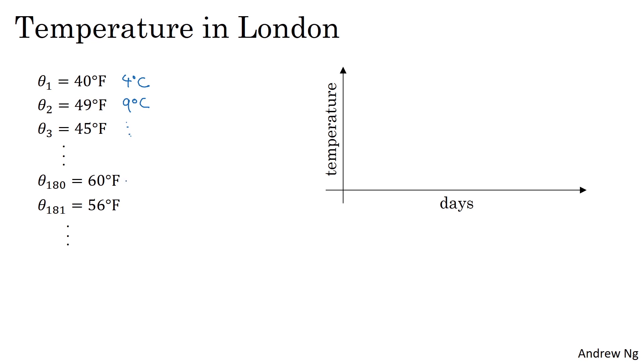And then about halfway through the year, a year has 365 days. So this would be day number 180, sometime in late May I guess. It was 60 degrees Fahrenheit, which is 15 degrees Celsius and so on. So it starts to get warmer towards summer and it was colder in January. So you plot the data, you end up with this. With day one being sometime in January, that being the beginning of summer, and that's the end of the year, kind of late December.